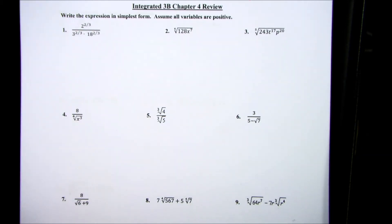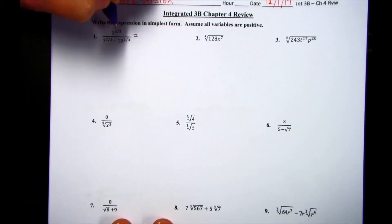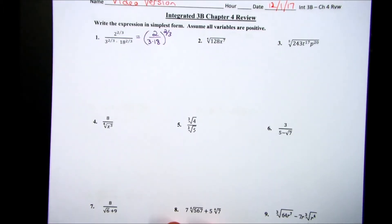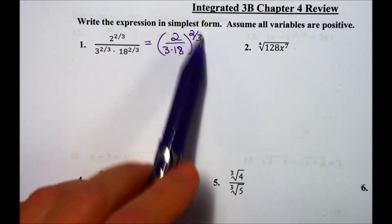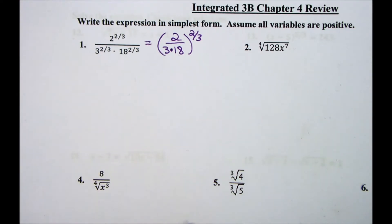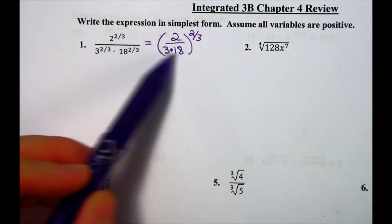In this first problem, we have rational exponents, and one thing you want to notice is that all of the exponents are the same — they all have an exponent of 2/3. That means we can use the rule that we can rewrite this as 2/18 to the 2/3 power. One of your exponential rules is that when you have an exponent on the outside, it can be distributed to all the factors on the inside. You can also work backwards: if all terms have the same exponent, you can factor it out and then simplify the fraction underneath.